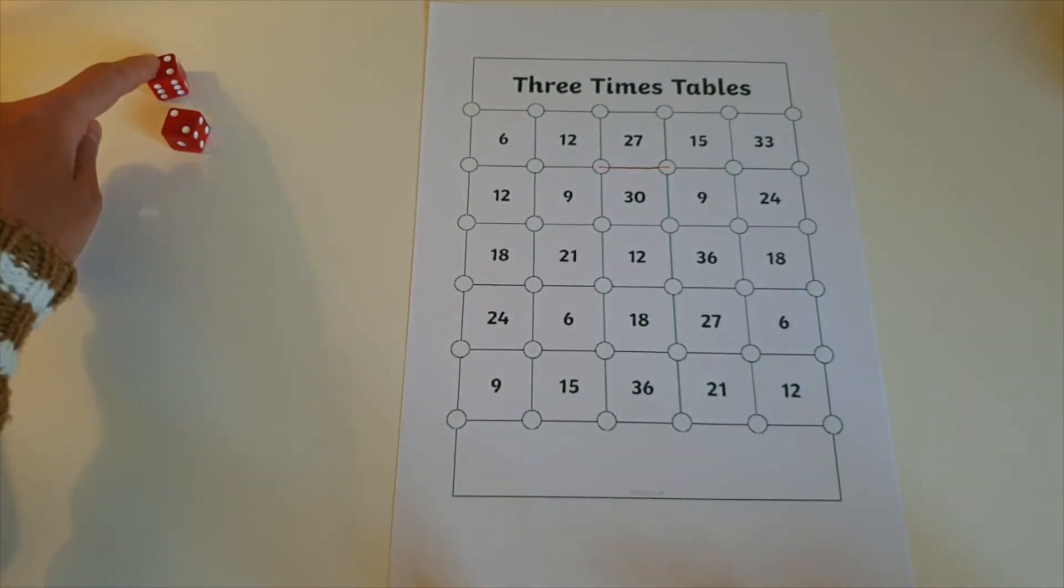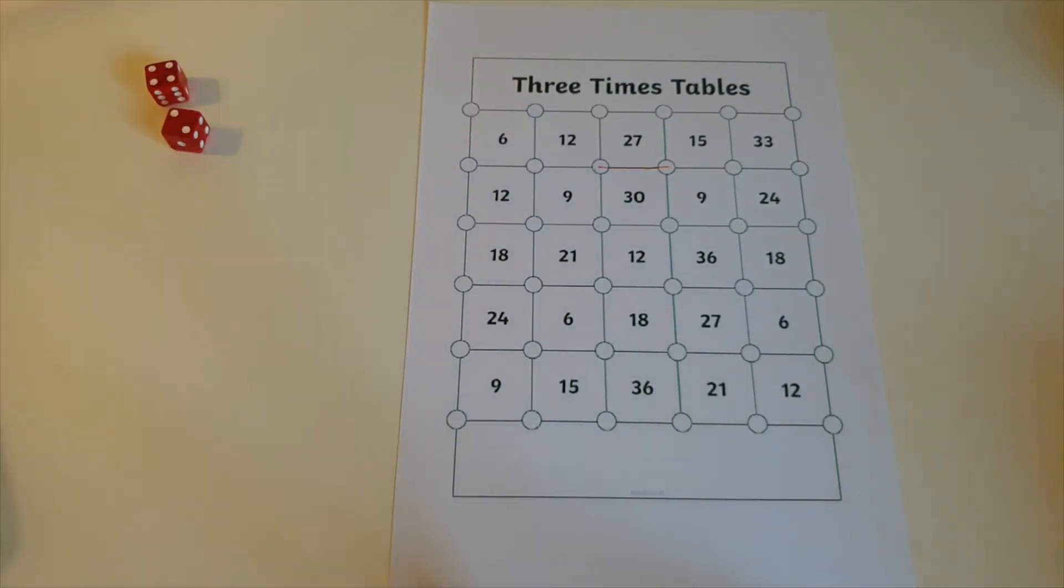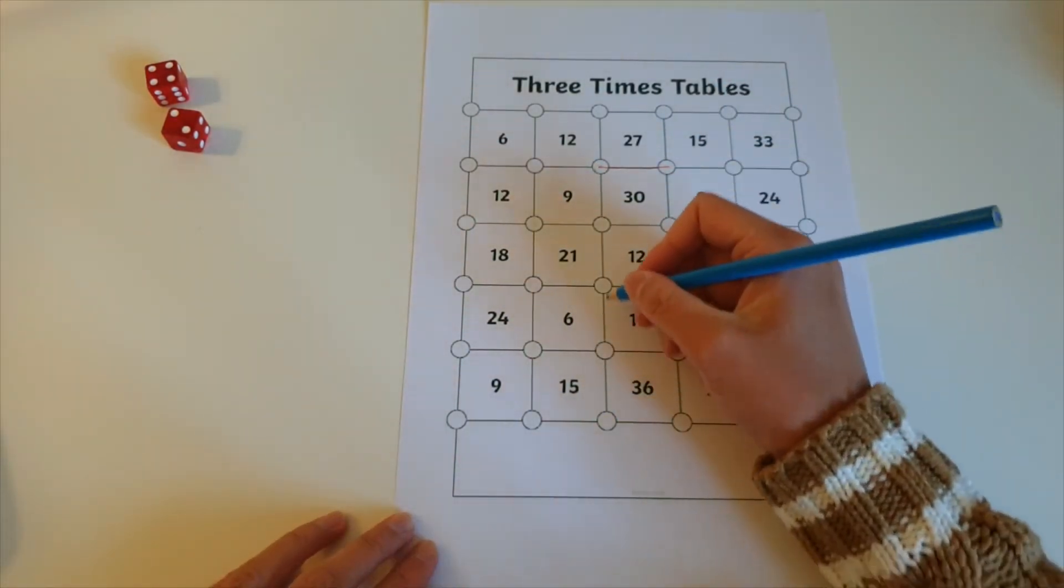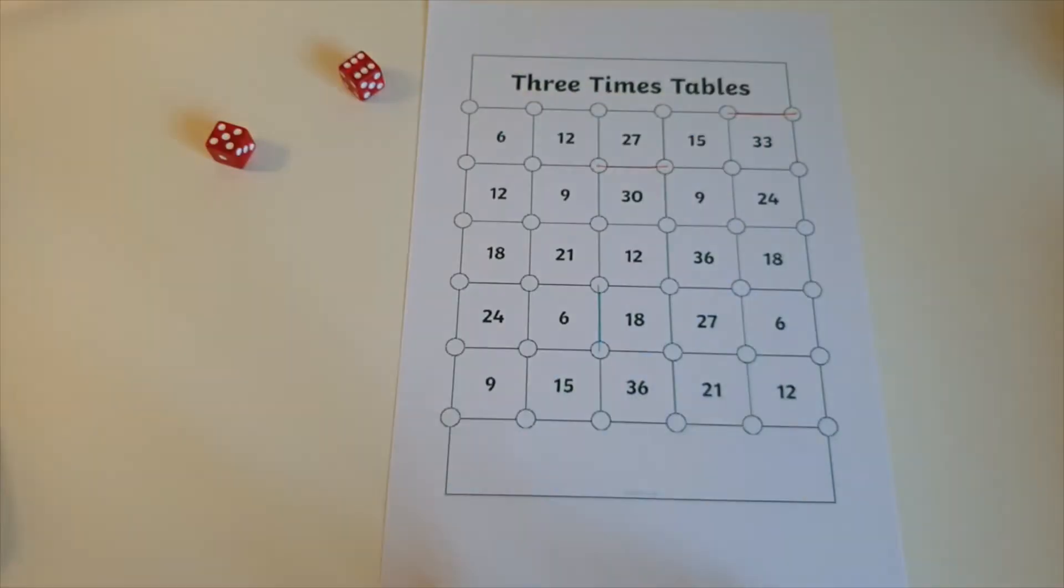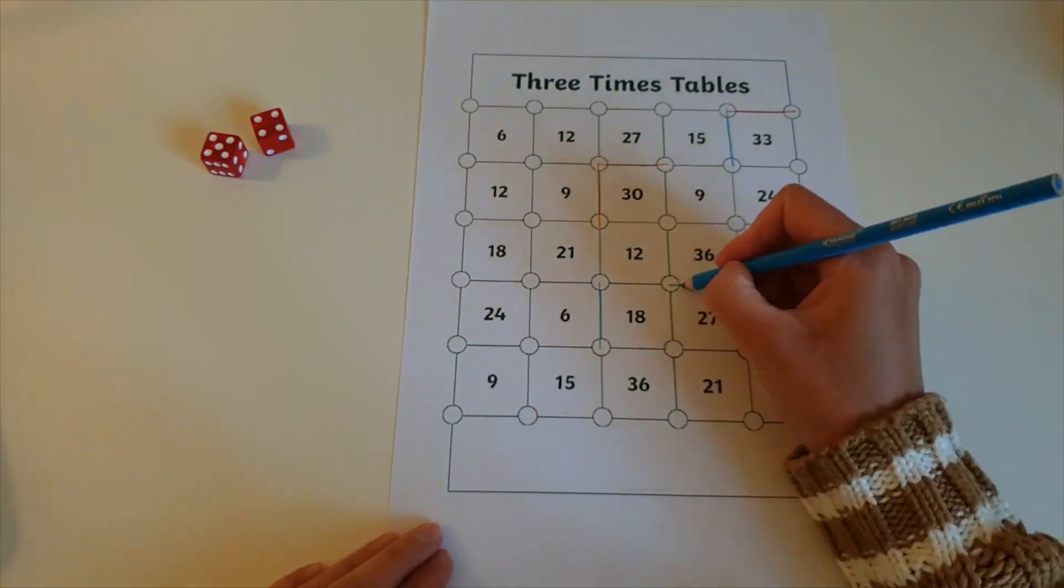If your times table answer is a number which already has three lines around the outside, you can finish off the square. Draw the final line and colour the square in. If you have rolled and the square has been coloured in, roll again. The player who has most squares coloured in wins!